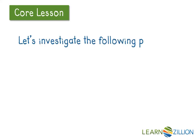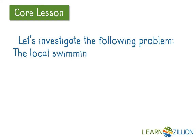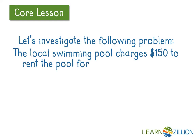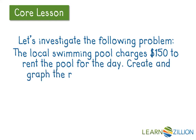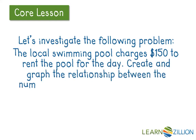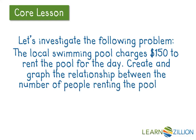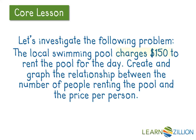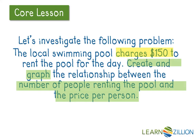Let's go ahead and investigate the following. The local swimming pool charges $150 to rent the pool for the day. Create and graph the relationship between the number of people renting the pool and the price per person. We know that the pool costs $150 no matter how many people are renting it. This question is asking us to create and graph the function between the number of people renting and the price per person.